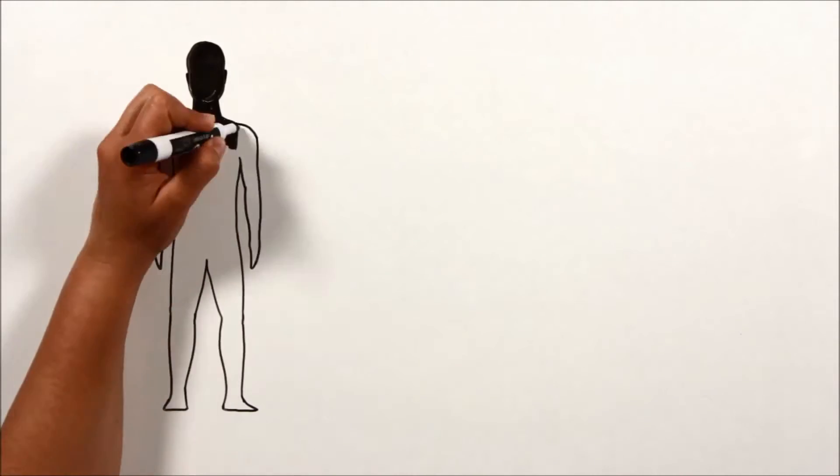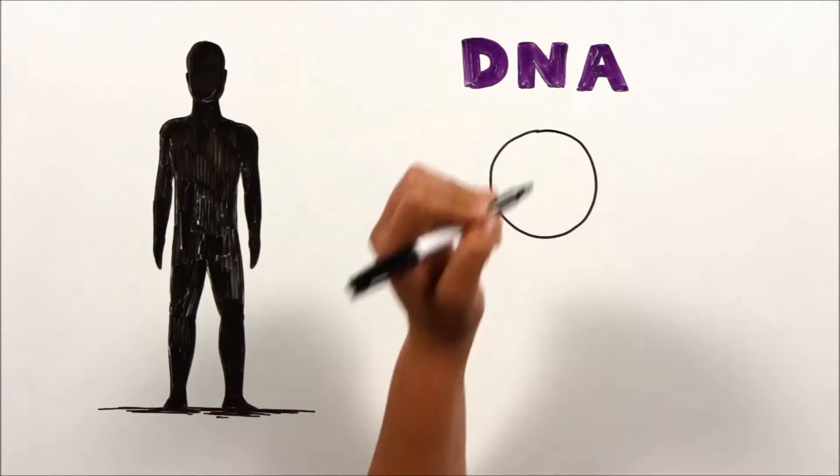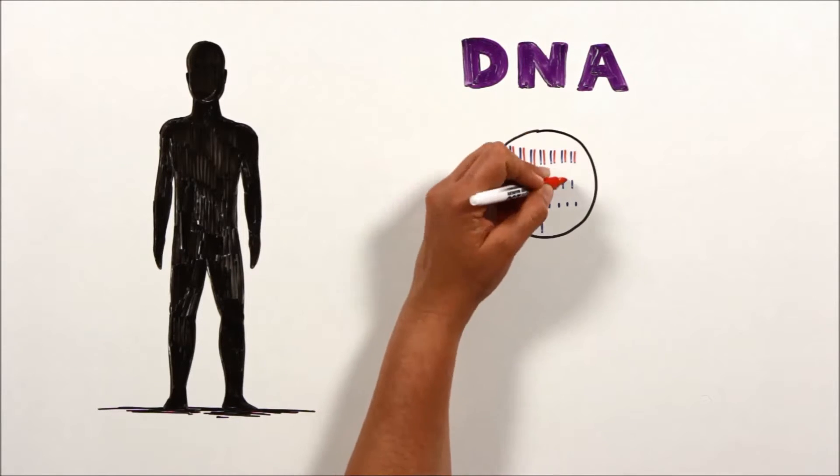The cells in our body contain genetic information in the form of DNA. This DNA is packaged into 23 pairs of chromosomes, making a total of 46 chromosomes.